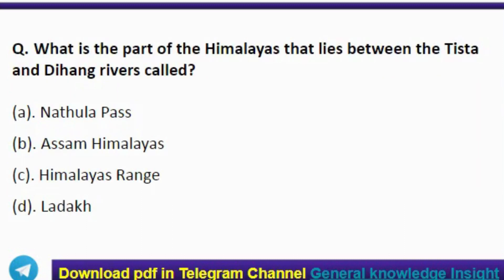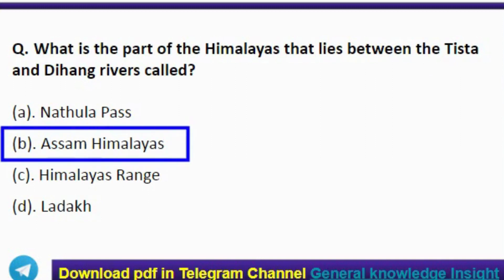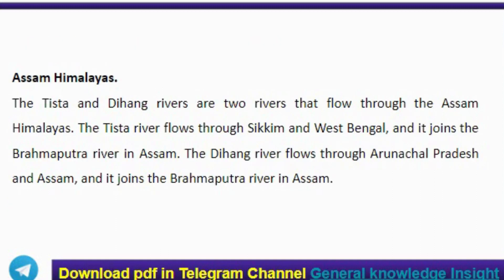Next question: what is the part of the Himalayas that lies between the Tista and the Dihang rivers? The correct answer is option B, Assam Himalayas. The Tista river flows through Sikkim and West Bengal and joins the Brahmaputra river in Assam. The Dihang river flows through Arunachal Pradesh and Assam and also joins the Brahmaputra river in Assam.